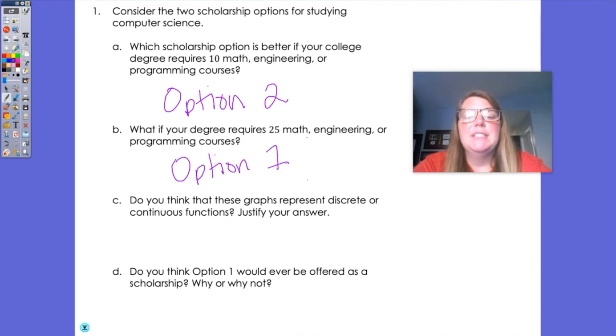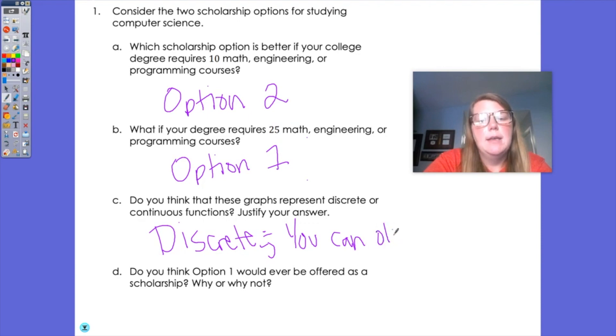Do you think these graphs represent discrete or continuous functions? So let's go back to talk about our domain. Discrete means only specific inputs are allowed. Continuous means I can input any number that I want. And so this would be discrete. And the reason why is you cannot take a fraction or a decimal amount of course numbers. You can only take whole courses. So the reason why it's discrete is you can only take whole numbered courses.